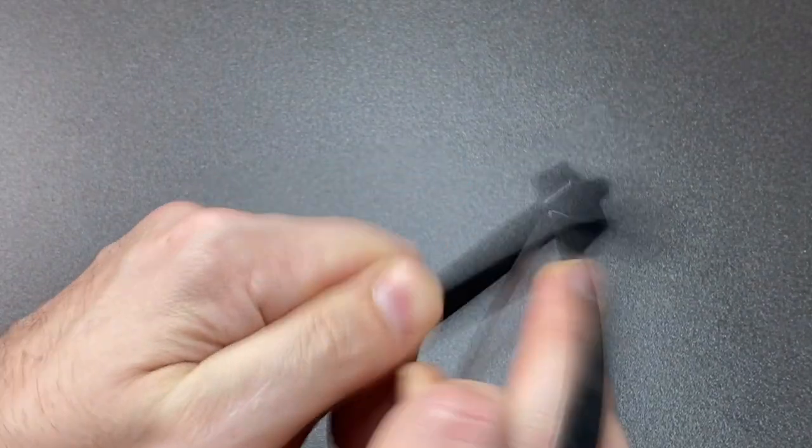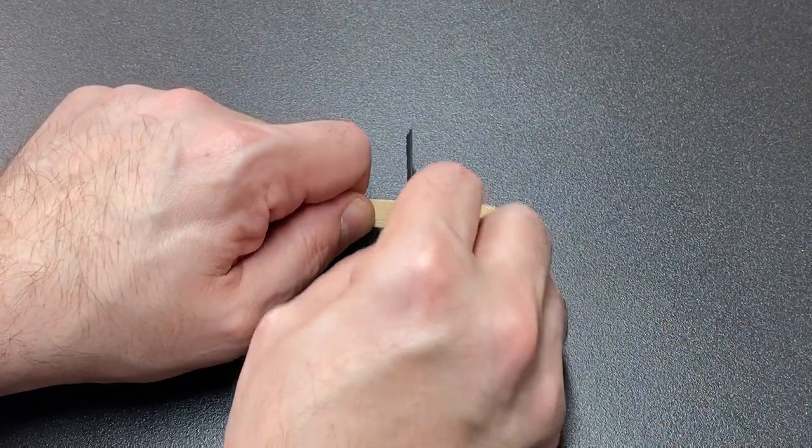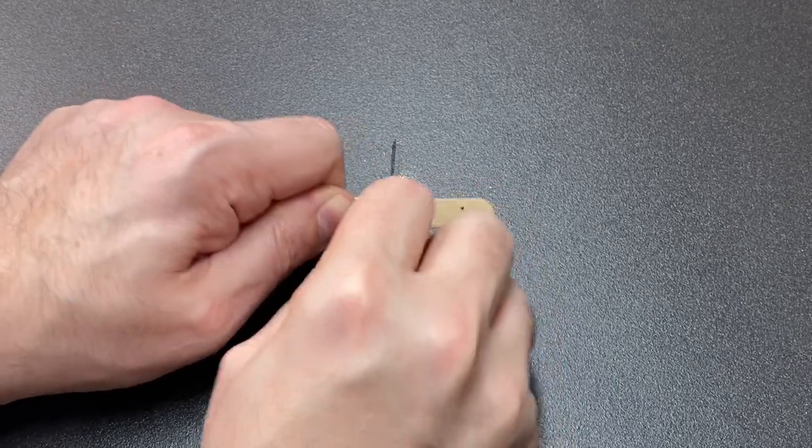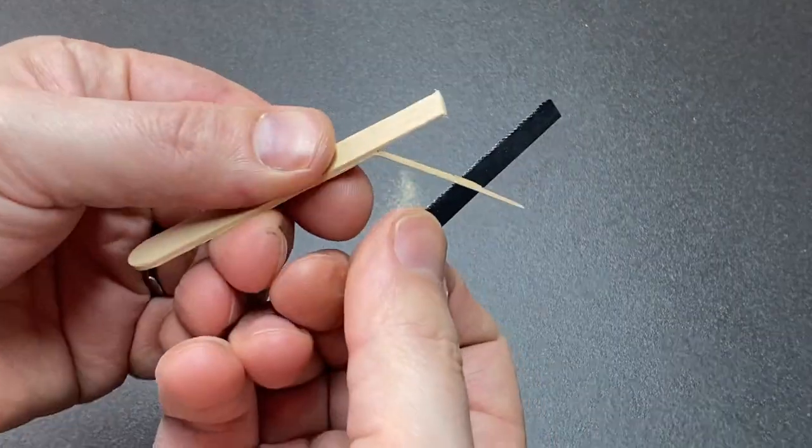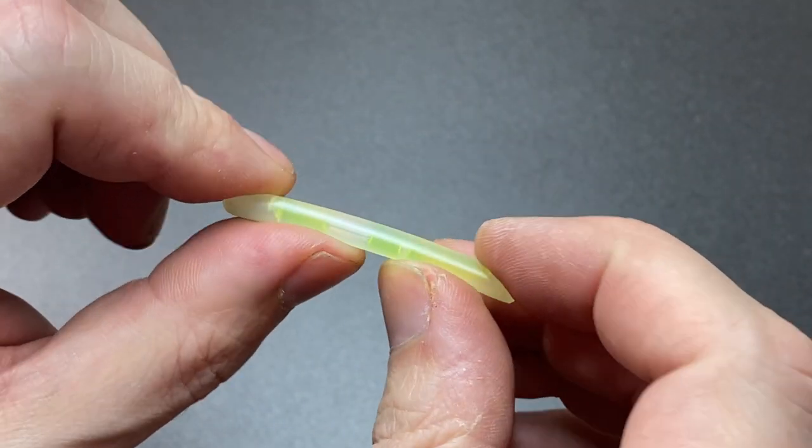The saw is definitely a saw. Let's actually saw something with it to prove a point. There you go, very effective. Now I want to see if the glow stick works. I'll just snap it, give it a shake, then turn all my lights off. There we go, it works. Pretty cool.